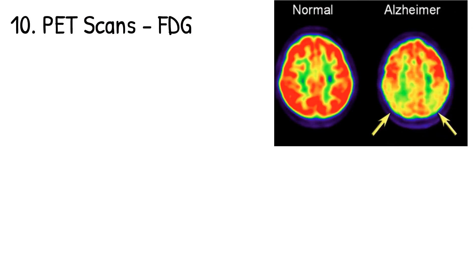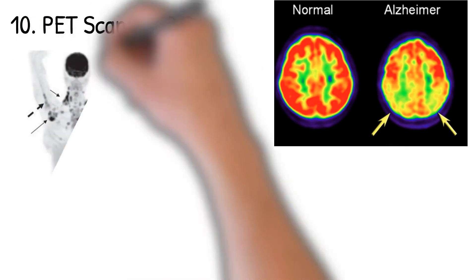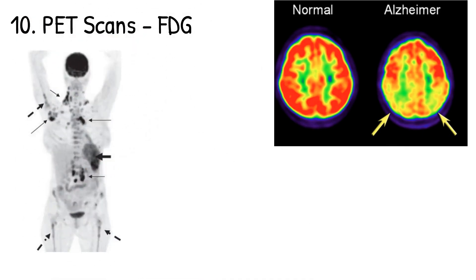For PET scans, FDG or radioactive glucose is the most common tracer being used. It's used for brain imaging. You can see here a patient with Alzheimer's disease with changes in glucose metabolism compared to a normal patient. It's also used in tumors because glucose is over-metabolized in tumors.